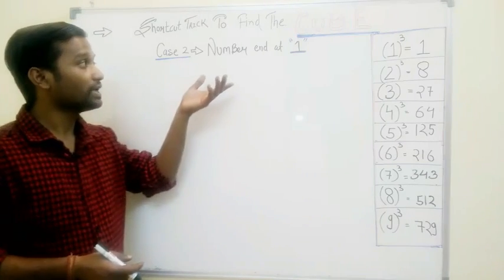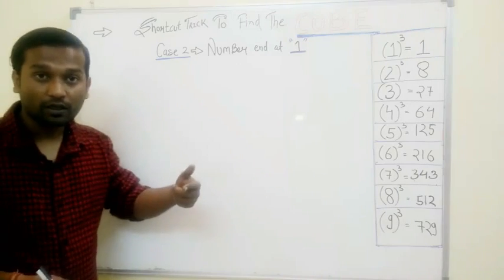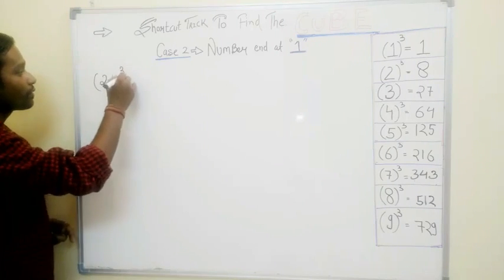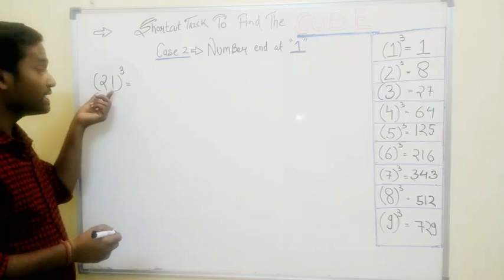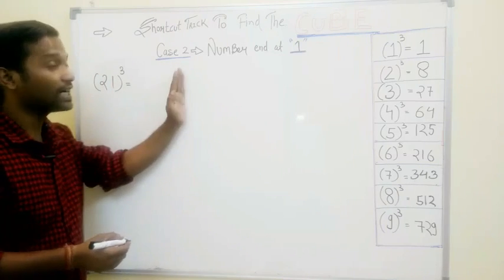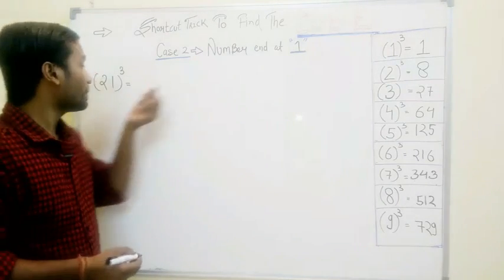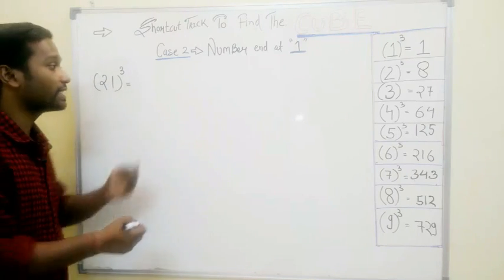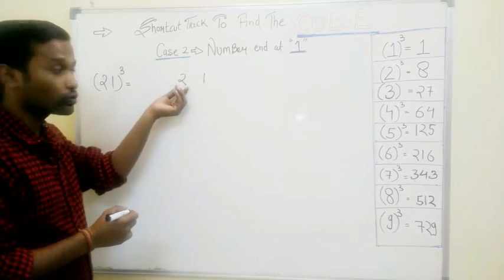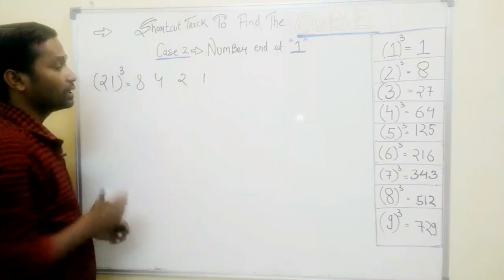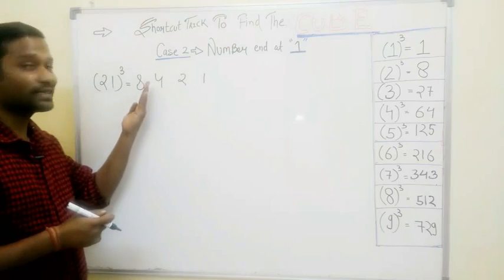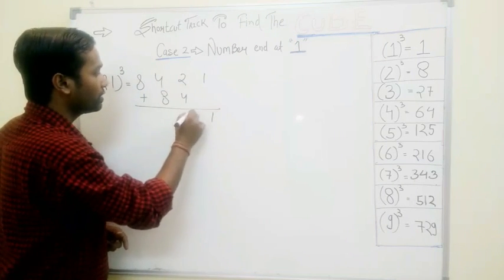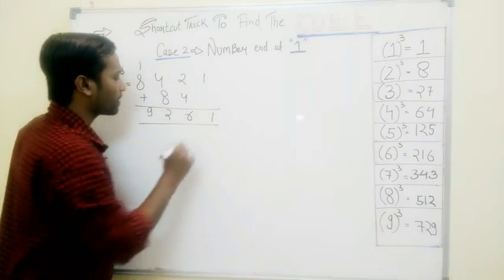Case number 2 covers those numbers that end at 1, like 21, 31, 41, 51, 61, 71. Let's take an example: 21 cubed. We have to write these two numbers from the right-hand side — in case 1 we took from the left, but in case 2 we take from the right. So we write 1 and 2. Square this number — that is 4 — and cube this number — that is 8. Leave the extreme right and extreme left and double: simply add 4 and 8, giving 1, 6, 12, carry 1, and 9. So our answer is 9261.